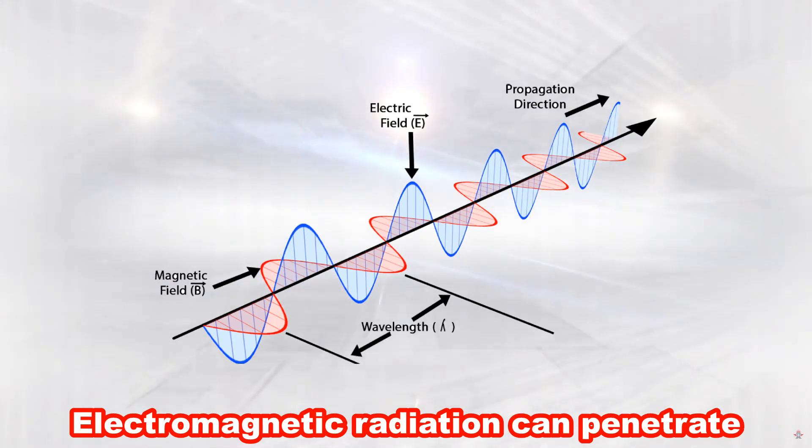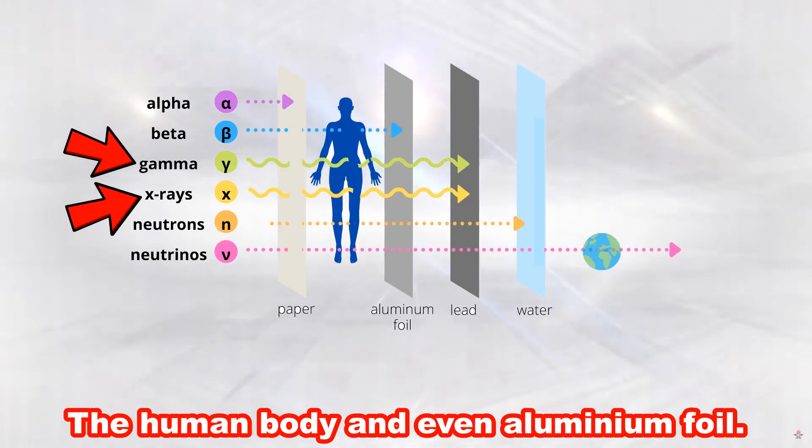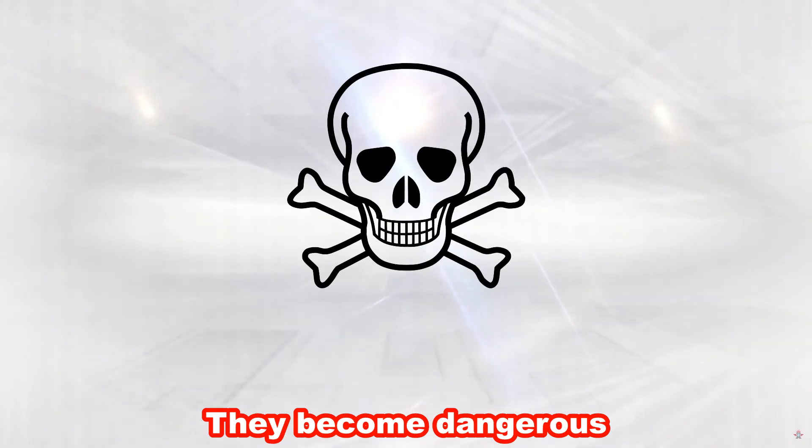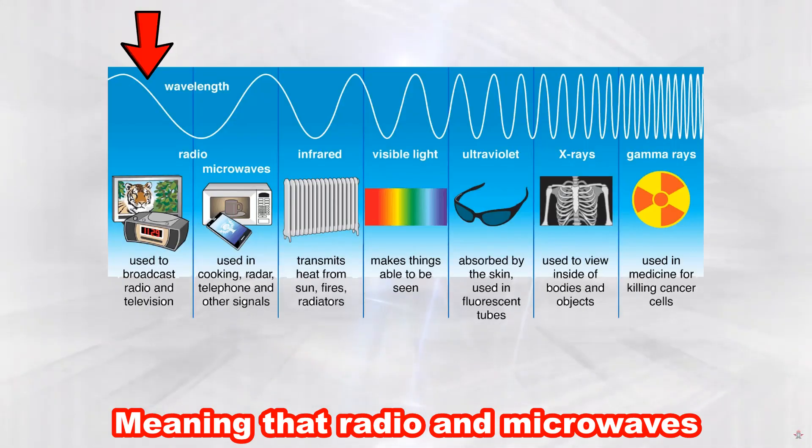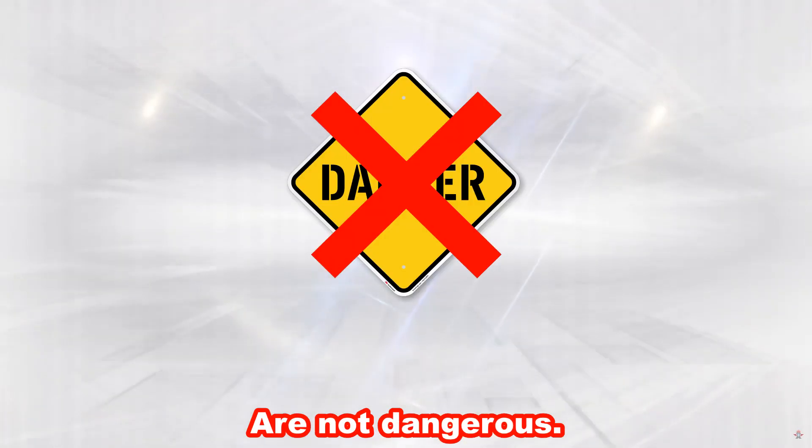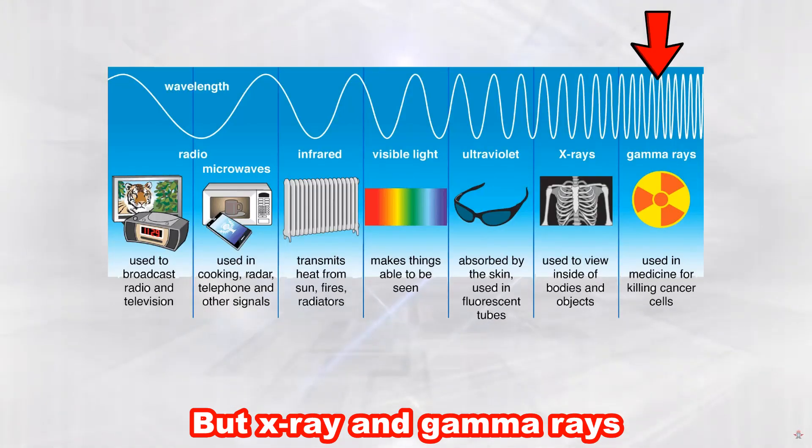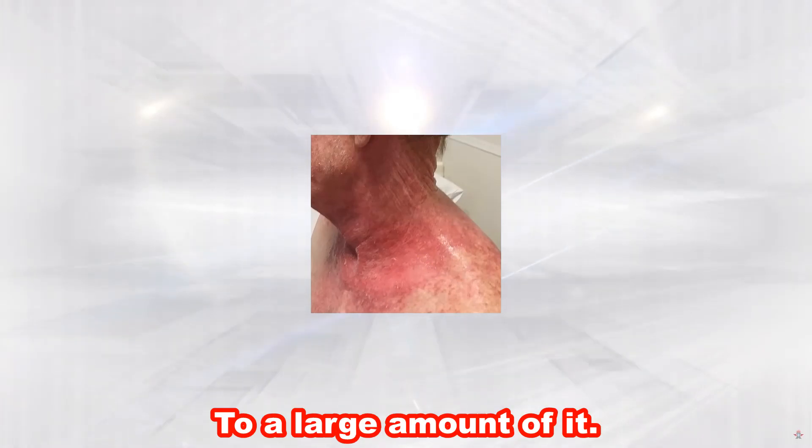Electromagnetic radiation can penetrate the human body and even aluminum foil. They become dangerous the smaller the wavelengths are. Meaning that radio and microwaves are not dangerous. But X-ray and gamma rays can be if you are exposed to a large amount of it.